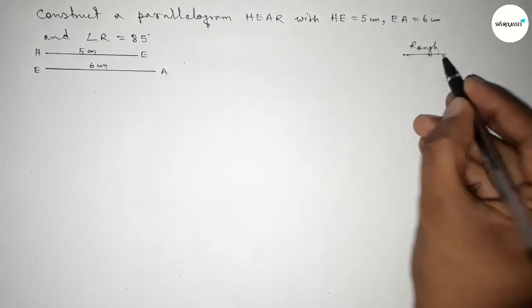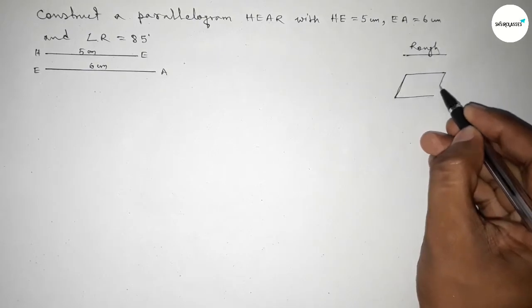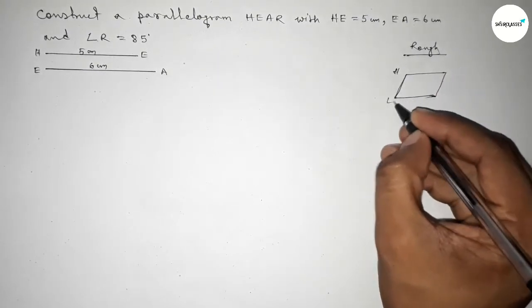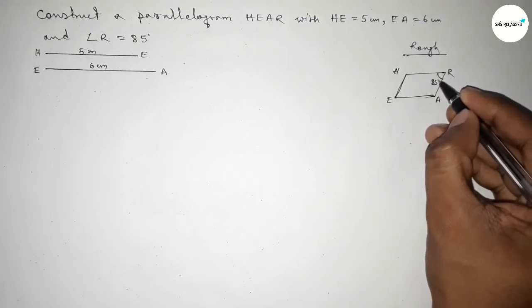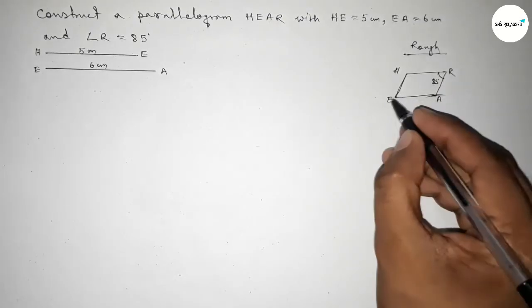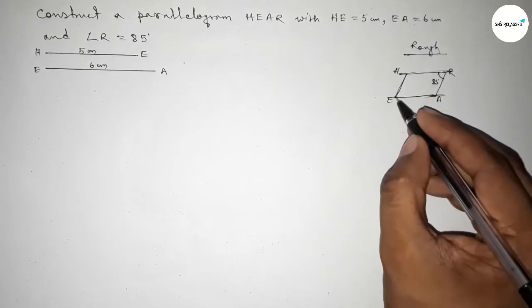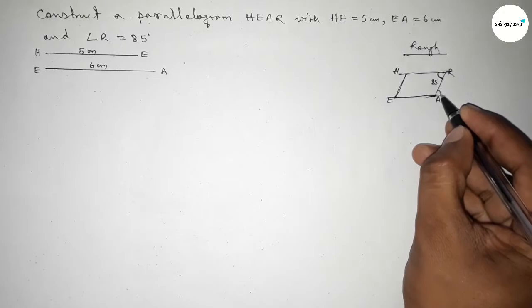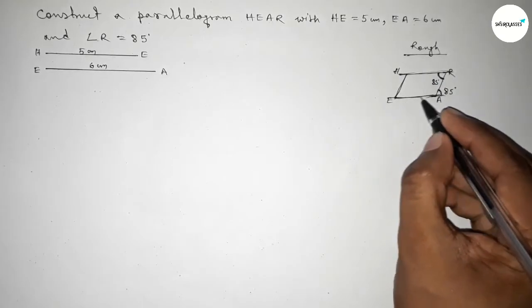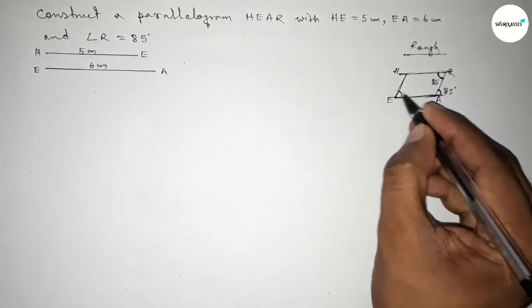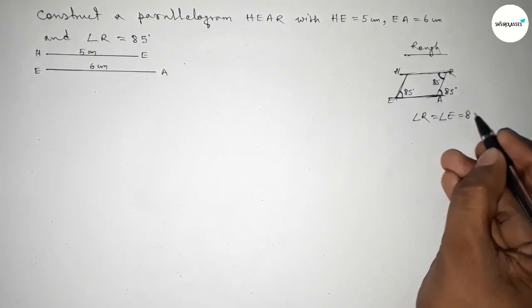Now roughly discussing some calculation. First roughly drawing a parallelogram HEAR. The angle of 85 degree is given. Increasing this line — this side and this side are parallel, so this angle and this angle are alternate angles. We know that alternate angles are equal. This line and this line are also equal, so this angle and this angle are corresponding angles, and therefore equal.